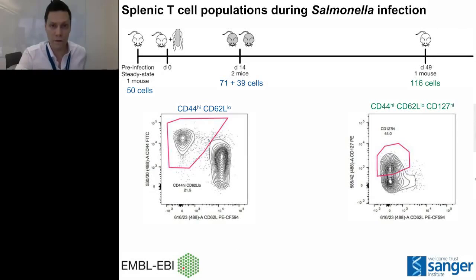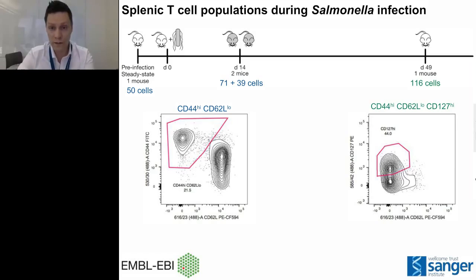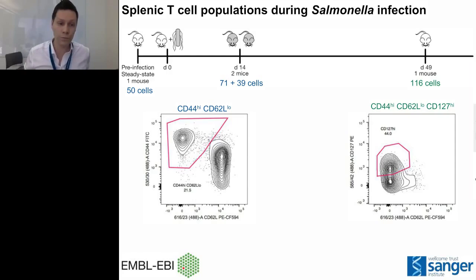Our goal was to study the dynamics of the CD4 T cell response against salmonella infection — a widely used model for TH1 differentiation in mouse, where TH1 cells play a protective role by secreting interferon gamma to activate macrophages in the liver and spleen. To study antigen-experienced cells, we sorted them based on CD44 and CD62L expression. We studied mice at day 14, close to the peak of infection; at day zero as healthy controls; and we sorted CD127-high cells from mice at seven weeks after infection as memory cells, when bacteria had already been cleared.